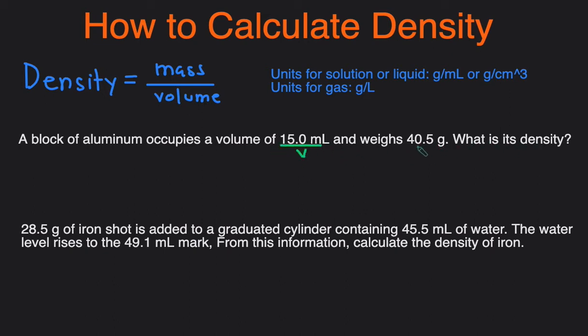So we're given the volume and we're given the mass. We can just plug into the equation: density equals the mass, 40.5 grams, divided by the volume, 15.0 milliliters. Plugged into a calculator we'll get 2.70 grams per milliliter.